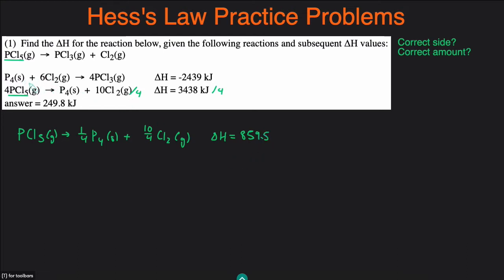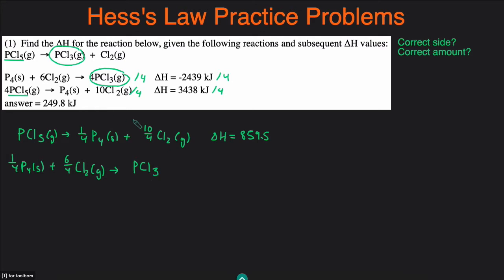For our other reaction, we can pick PCl3, because PCl3 only appears in the first reaction. It's on the correct side — we want PCl3 on the product side, and it currently is on the product side. Do we have the correct amount? We only want one PCl3, and we currently have four. So once again, we're going to divide this entire reaction by four, which means we divide the delta H by four. Rewriting it, we get one-fourth P4 solid plus six over four Cl2 gas becoming one PCl3. The delta H is negative 2439 divided by four, which gives negative 609.75.